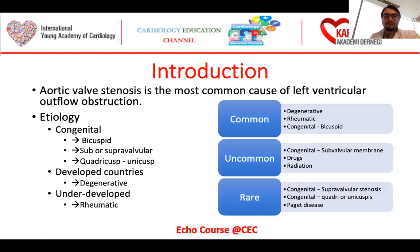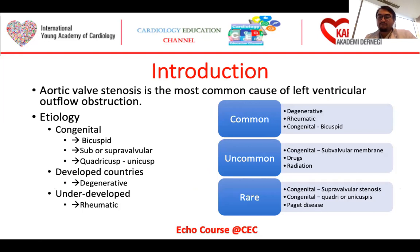Aortic valve stenosis is the most common cause of left ventricular outflow obstruction. Etiology depends on congenital diseases. In developed countries it's degenerative mostly, but in underdeveloped countries it's rheumatic disease. Most commonly we see degenerative, rheumatic, and congenital aortic valves in aortic stenosis, but uncommonly, subvalvular membranes, supravalvular membranes, or drugs and radiation might also cause aortic valve stenosis. Rarely we see other congenital malformations together with other kinds of diseases.